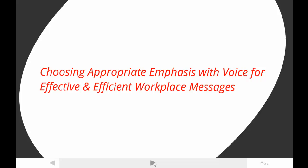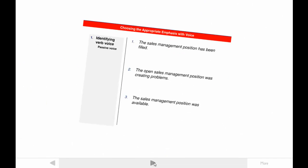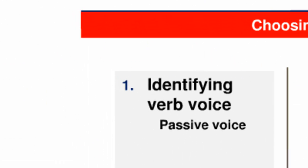I also hope to persuade you that avoiding style problems in this letter is important. Before you can choose appropriately, you need to be able to identify verb voice, so that's where we'll start. The key is to look for a form of the verb BE, followed by a verb ending in ED or EN.